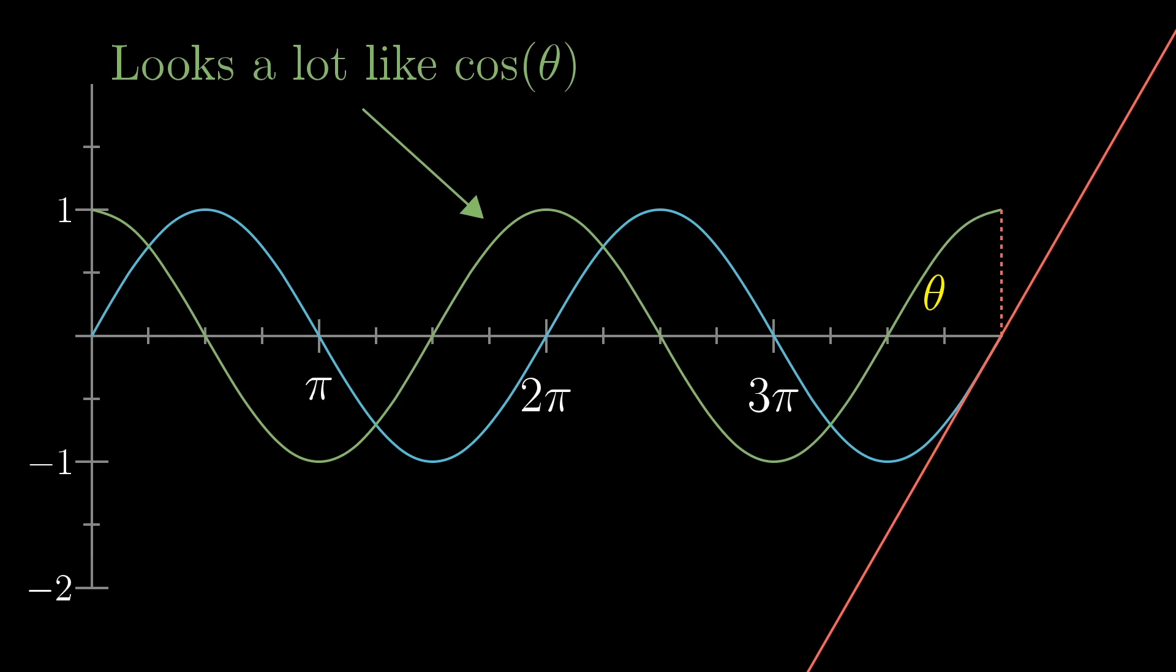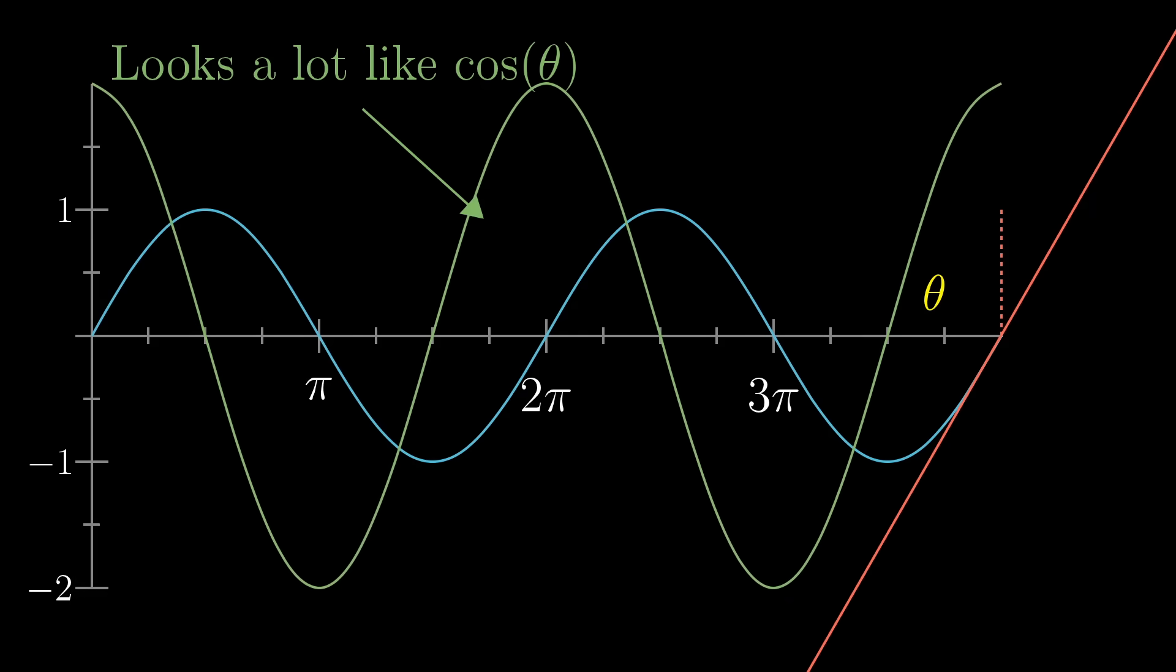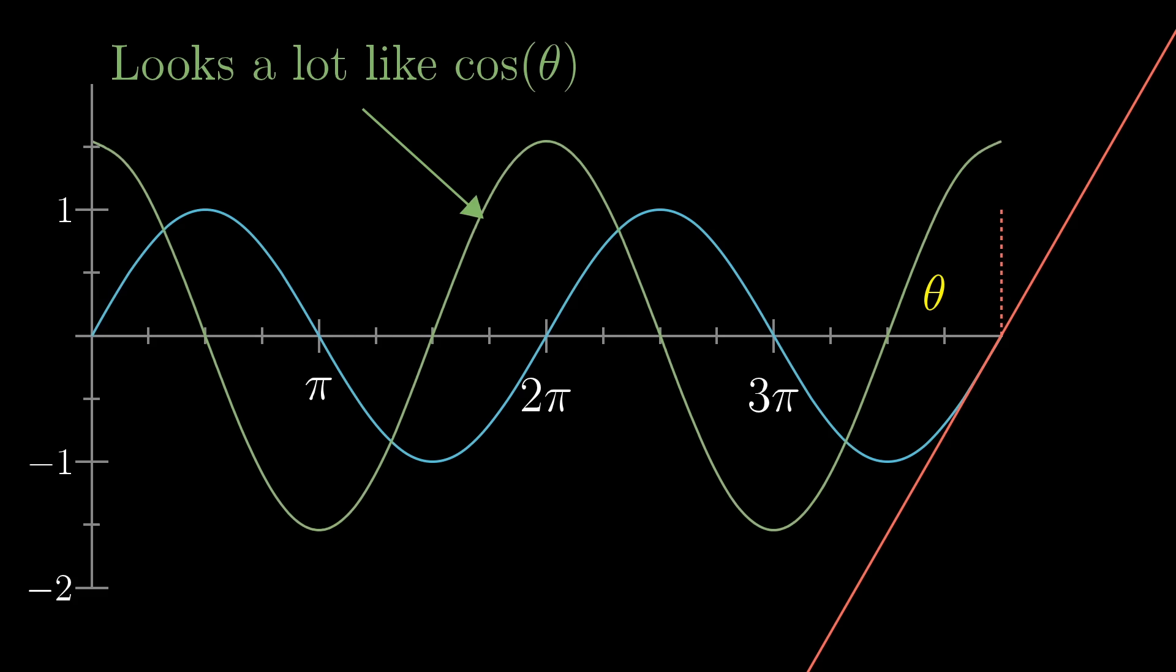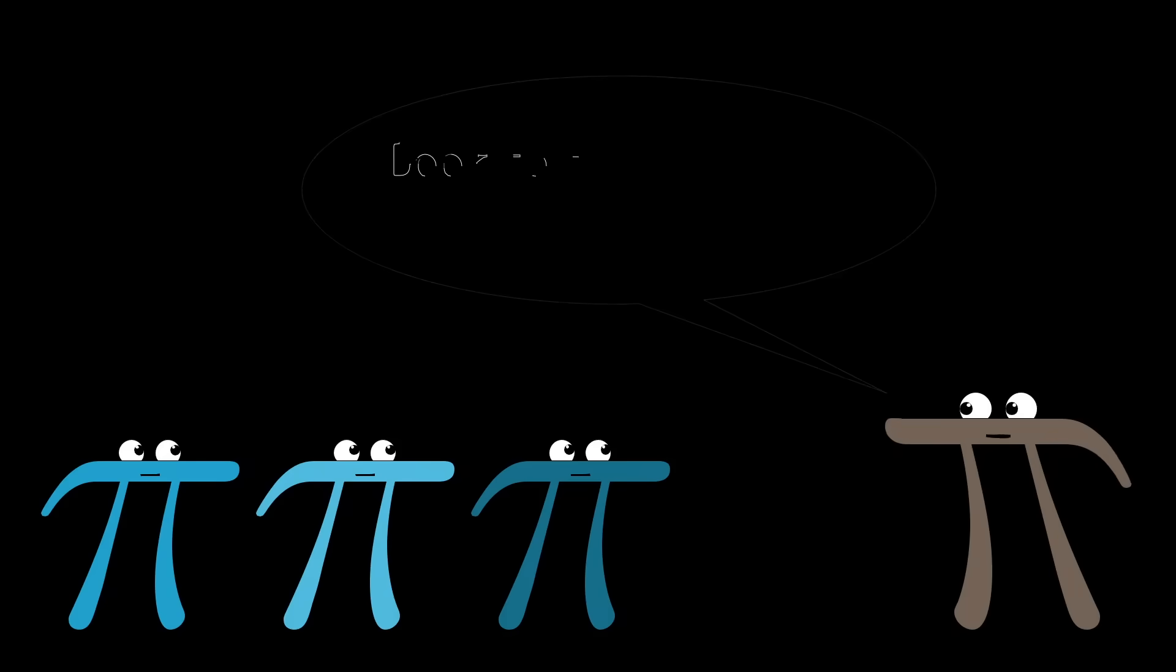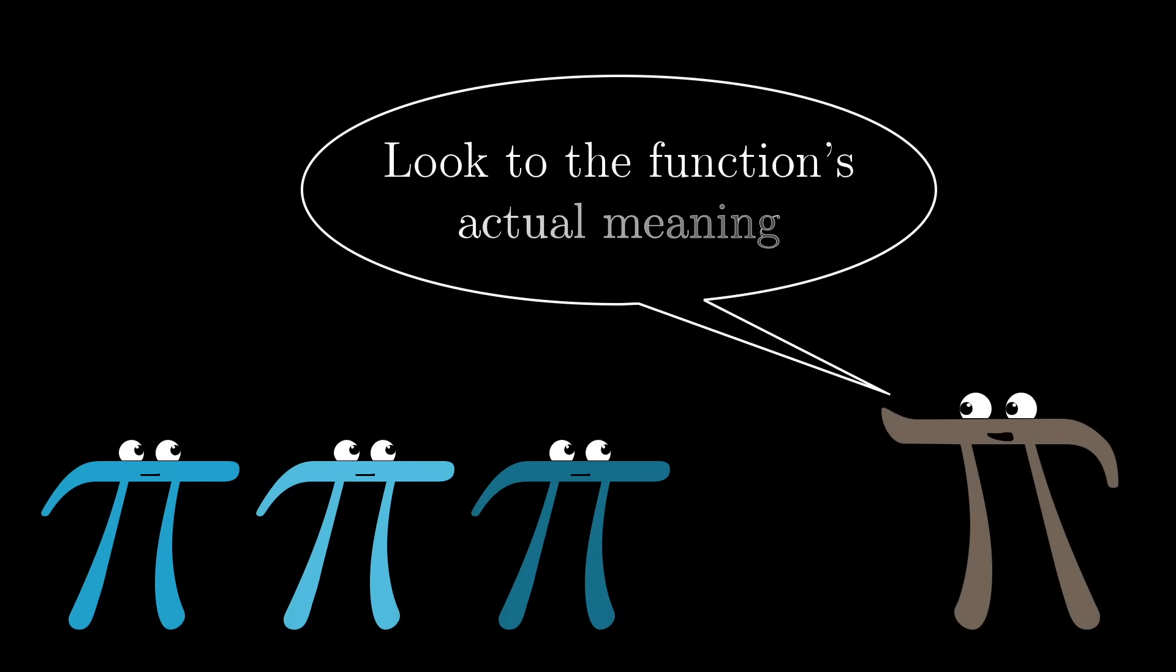But aren't you a little curious about why it's precisely cosine of theta? I mean, you could have all sorts of functions with peaks and valleys at the same points that have roughly the same shape, but who knows, maybe the derivative of sine could have turned out to be some entirely new type of function that just happens to have a similar shape. Well, just like the previous examples, a more exact understanding of the derivative requires looking at what the function actually represents, rather than looking at the graph of the function.